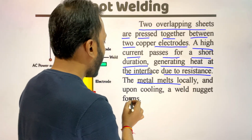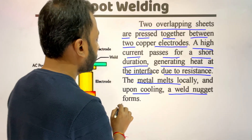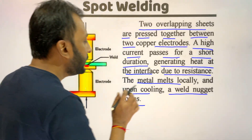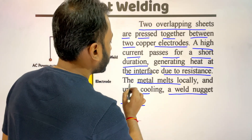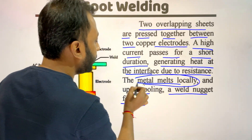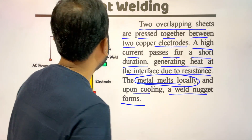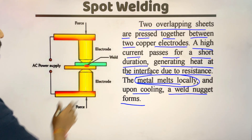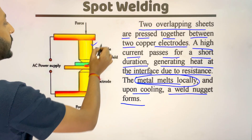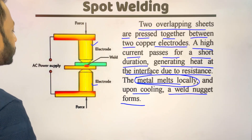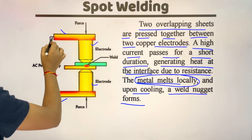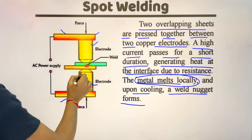The metal melts locally and upon cooling a weld nugget forms. In spot welding, the metal melts in a very small area. This is the setup of spot resistance welding process — this is one electrode, this is another electrode, and they are connected to the tongs. Both tongs are made of metal and the electrodes are also made of metal.